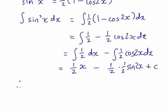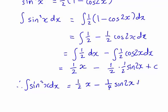So this is the integral of sin squared x with respect to x. It is simply equal to 1 half x minus 1 quarter sin 2x plus c.